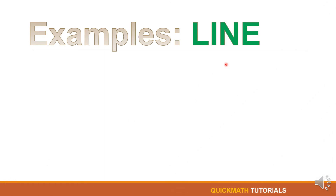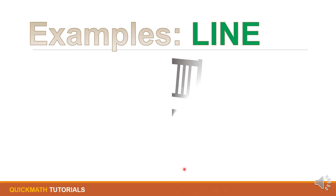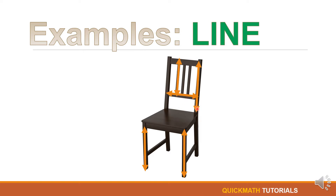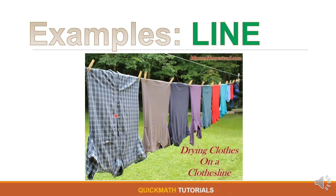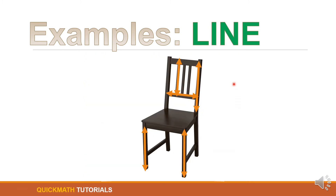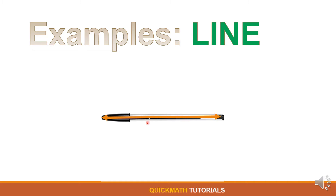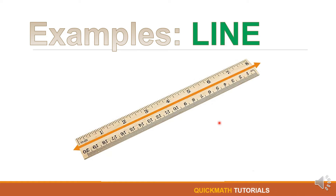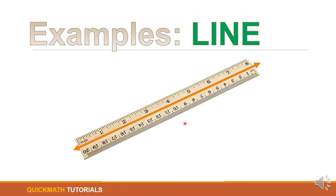Now let's look at some examples of a line which can be seen in real life or in your surroundings. First, we have a chair — the edges of a chair are examples of a line. Another is a clothes line. Third is a pen, which is an example of a line. And last is a ruler, which is also an example of a line. There are still more examples which you can see at home or in your surroundings.